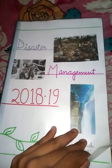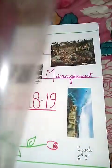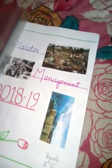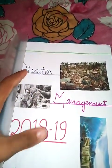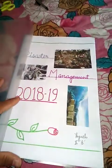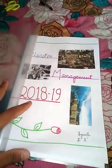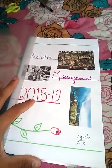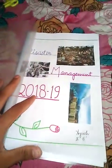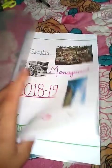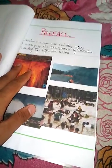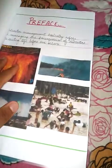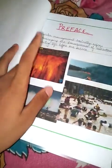This page is just for decoration — you can see the name 'Disaster Management' with some pictures on the cover. Now this is the preface. The preface is normally two to three lines which introduces the topic.